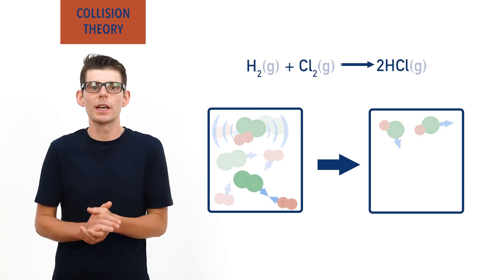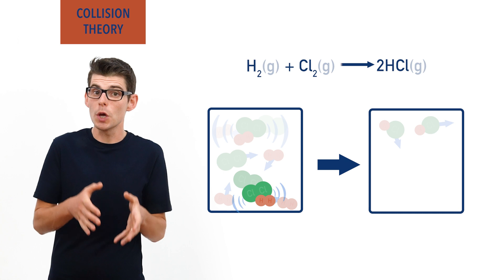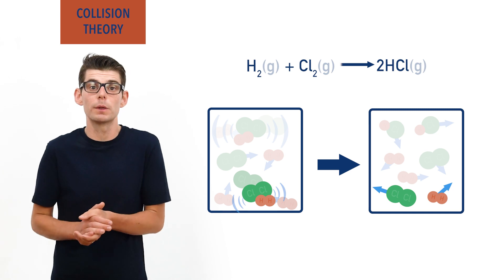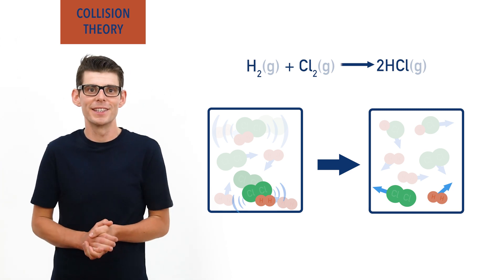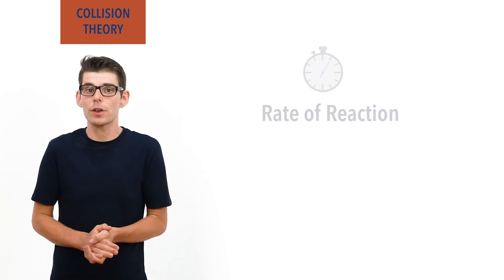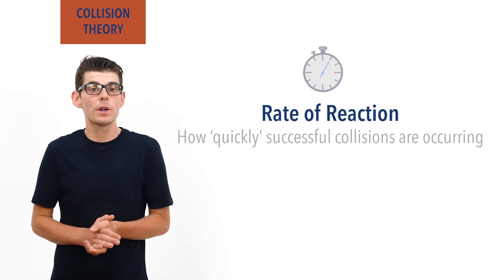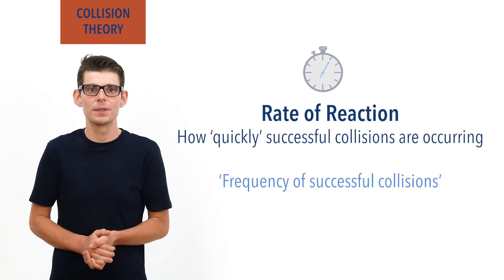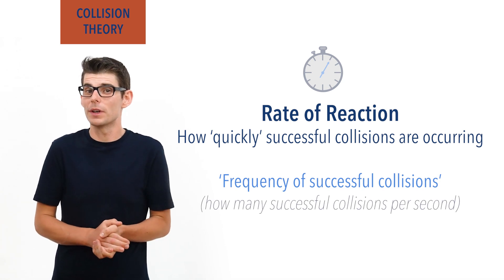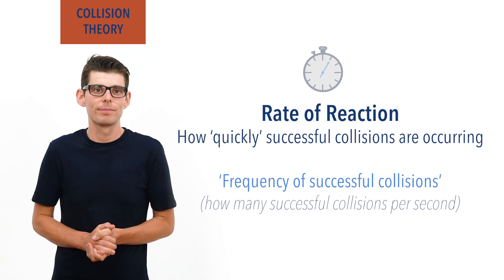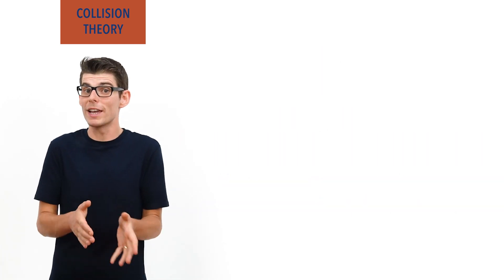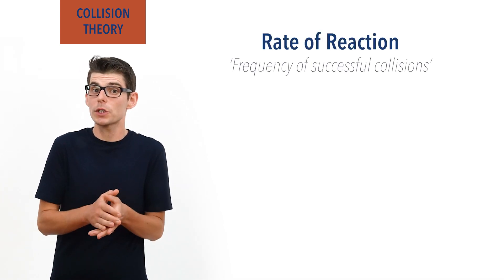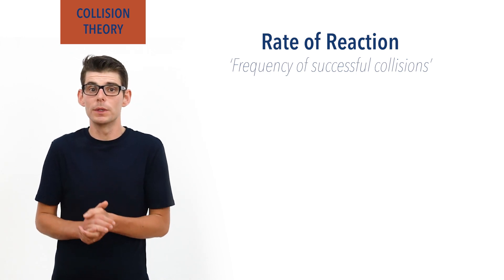If they don't collide with this amount of energy, however, the particles don't react and remain as hydrogen and chlorine, moving around again until they do collide with enough energy and become hydrogen chloride. The rate of any reaction is based on how quickly successful collisions are occurring, described as the frequency of successful collisions — in other words, how many successful collisions are happening each second. When we talk about the rate of a reaction, what we are really talking about is the frequency of successful collisions between particles, and there are four things that influence this.